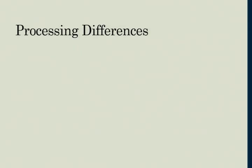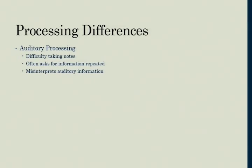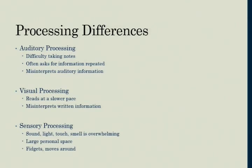It falls under auditory processing: difficulty taking notes and listening to instruction at the same time. Students might often ask for information to be repeated - those are the students where you just gave directions and somebody raises a hand and says, what are the directions? And then you give the directions again and they still do it wrong because they've misinterpreted what you said. Visual processing: students read at a slower pace, misinterpret written information. And then sensory processing: where sound, light, touch, smell is very overwhelming.